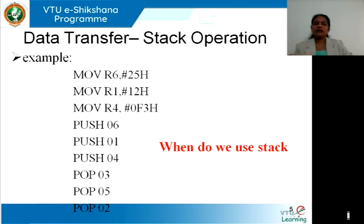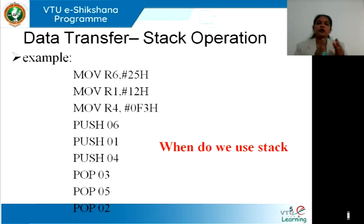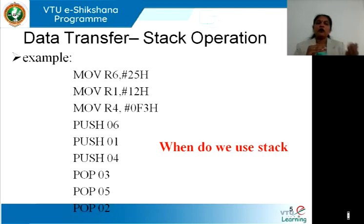In the next example, we have pushed data onto the stack: 25H at the bottom, then 12H, then F3H on top. Now when we pop: POP 03 — address 03 is register R3. POP 05 — address 05 is register R5. POP 02 — address 02 is register R2. So F3H on top is copied into R3 and the stack pointer decrements. Then 12H is copied into R5 and decremented again. Finally, 25H is copied into R2 and the stack pointer decrements once more.